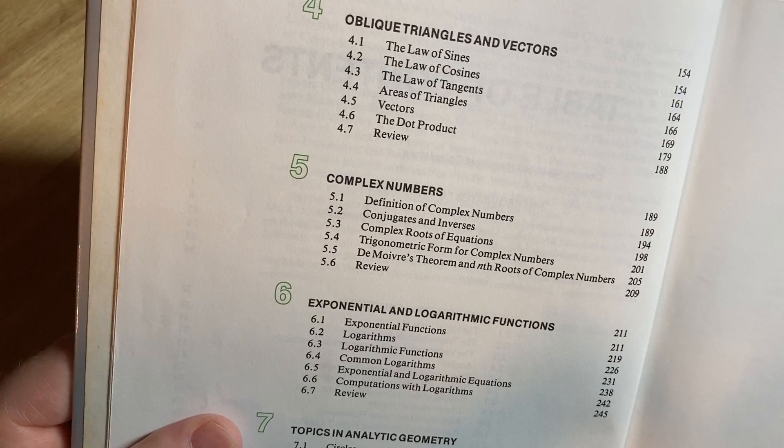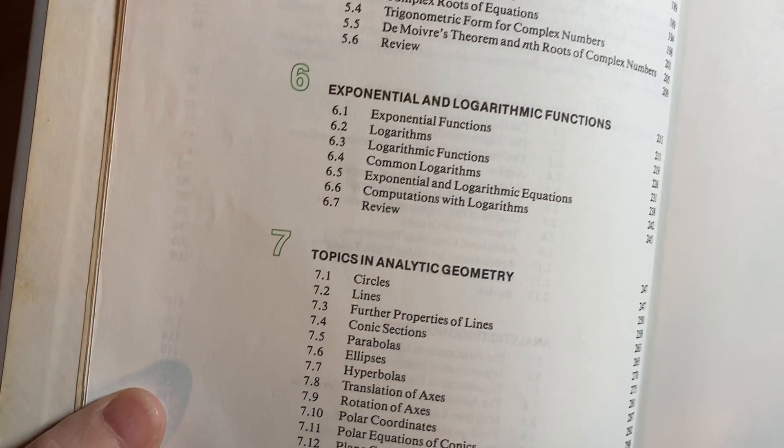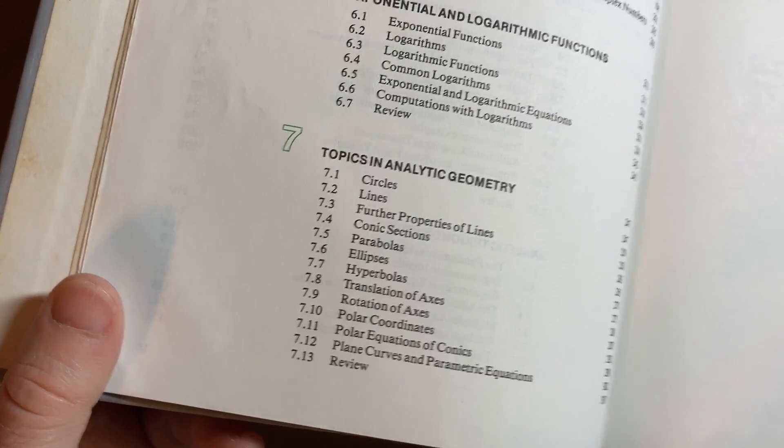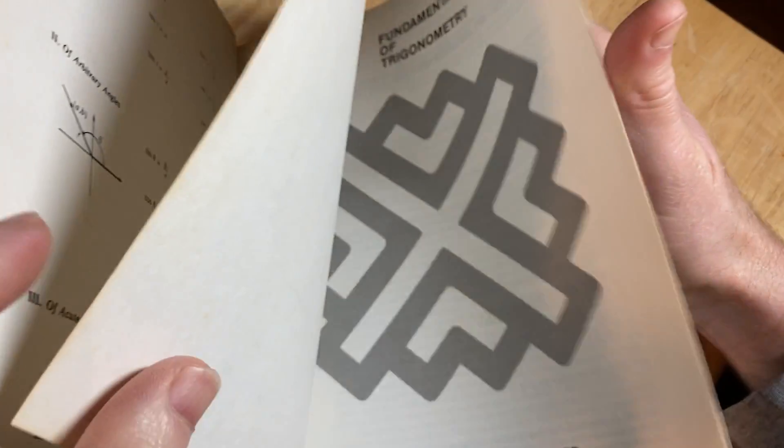Oblique triangles and vectors. Complex numbers. And this does have exponentials and logs, and then some analytic geometry as well. And then some tables here. And answers to the odd numbered problems in the back of the book.